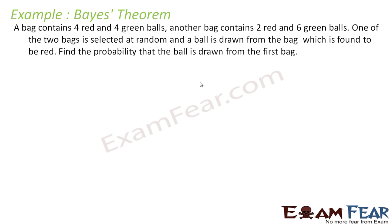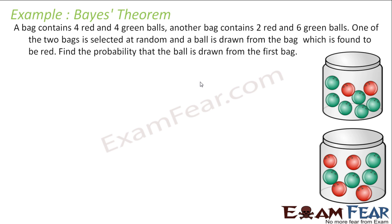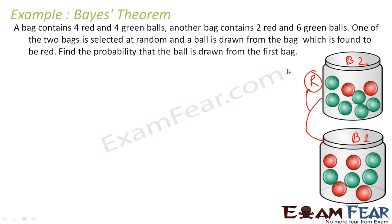Let us take an example. A bag contains 4 green and 4 red balls. Another bag contains 2 red and 6 green balls. So I have two bags: bag 1 with 4 green and 4 red, and bag 2 with 2 red and 6 green. One of the two bags is selected at random and a ball is drawn which is found to be red. We do not know which bag is selected; we just closed our eyes and drew one ball and found it is red. Find the probability that the ball is drawn from the first bag.